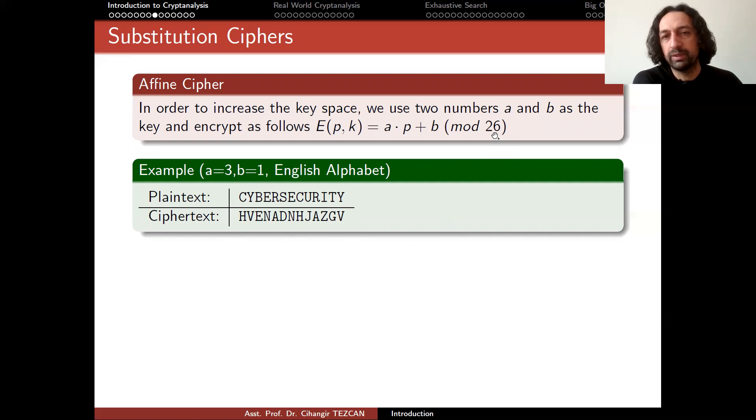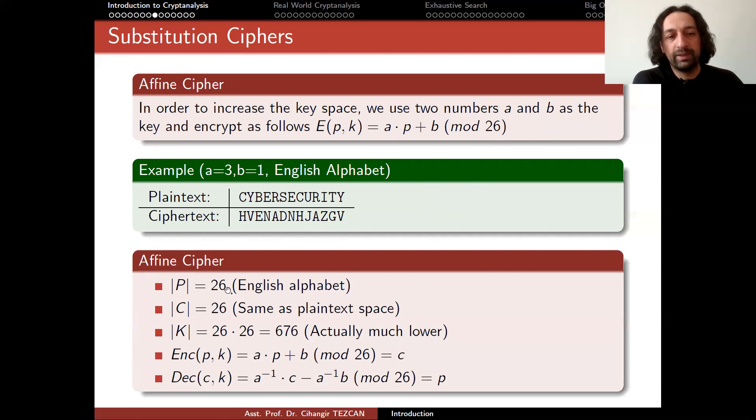Again, I use 26 because English alphabet has 26 letters. In Turkish, it will be 29. In different languages, it might be different. So again, plaintext space is 26 because we have 26 letters. The ciphertext space is also 26. But key space is now bigger because we are choosing a and b as an integer, which is less than or equal to 25. So we have 26 times 26, which is 676 possibilities for the secret key. So this is, of course, in theory, because in practice, it does not have this much. There are a few trivial examples. You cannot choose a and b equals to 0. Then the encryption would fail. Everything will go to a. Or if you choose a equals to 1 and b equals to 0, p would be equal to c.